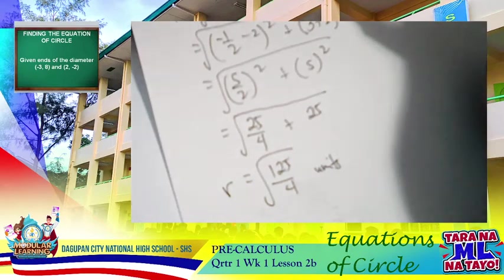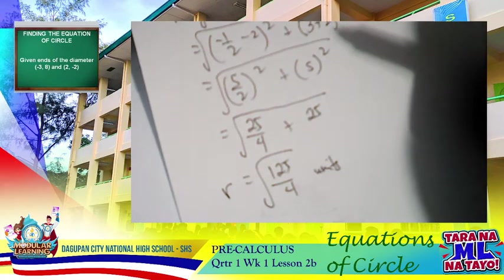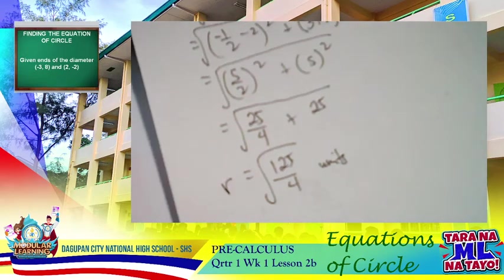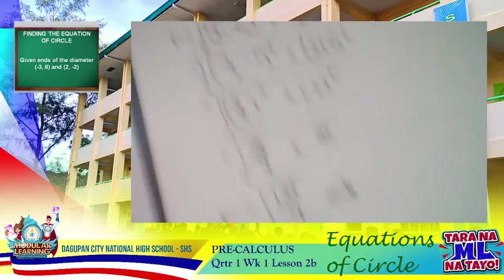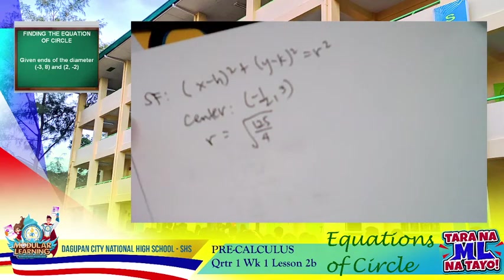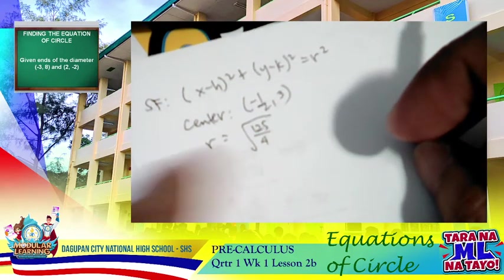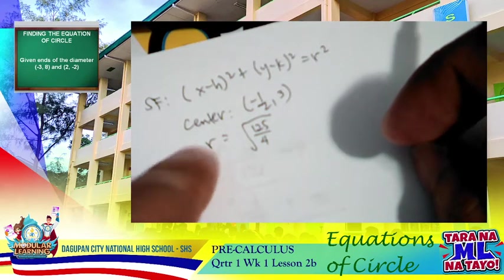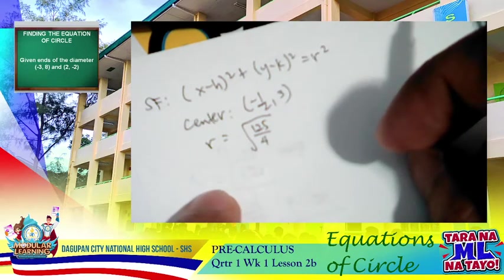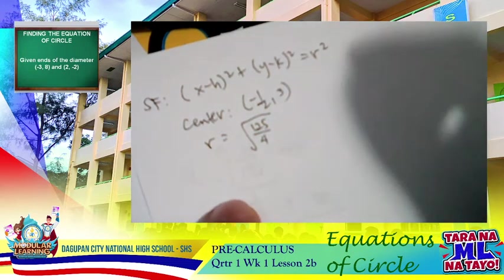We're going to use square root of 125 over 4 without converting to decimal. We are now ready to solve for the standard form: x minus h, quantity squared, plus y minus k, quantity squared, equals r squared. Our center from the midpoint is negative 1 half and 3, and our radius is square root of 125 over 4.